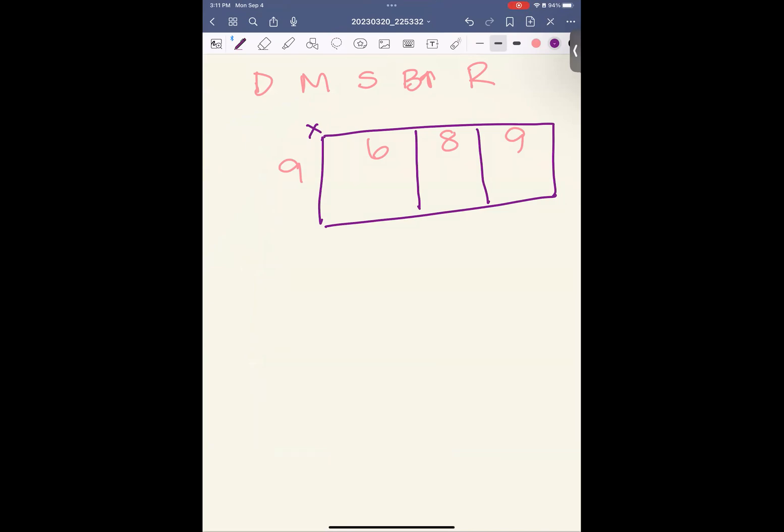How many groups of 9 can I take out of 6? 0 because 0 times 9 is 0. Subtract. 6 minus 0 is 6. Is 6 less than 9? Absolutely. I can bring it next door. How many groups of 9 can I take out of 68? 7 because 7 times 9 is 63. Subtract. 68 minus 63 leaves me with 5. Is 5 less than 9? Absolutely. So I'm going to bring it up. Do it again.